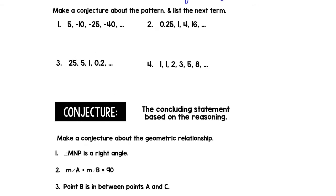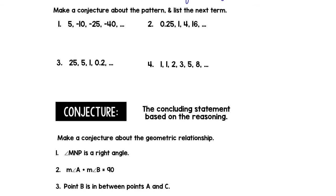Okay, let's scoot on down here. Make a conjecture about the pattern and list the next term. Well, to get from 5 to negative 10, I have to subtract 15. Negative 10 to negative 25, I subtract 15. Negative 25 to negative 40, I subtract 15. So it looks like my rule is to subtract 15. And the next term in this sequence will be negative 55.